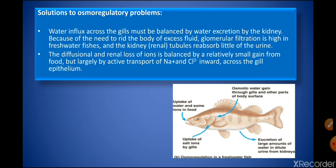Solutions to osmoregulatory problems in freshwater fishes: water influx across the gills must be balanced by water excretion by the kidney, so the urine produced is extremely dilute — requiring high glomerular filtration and minimal water reabsorption by the renal tubules. The renal loss of ions is balanced partly by a small gain from food, but largely by active transport of sodium and chlorine ions inward through the gill epithelium to replace salts lost in urine.